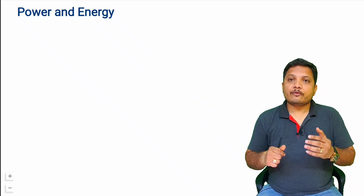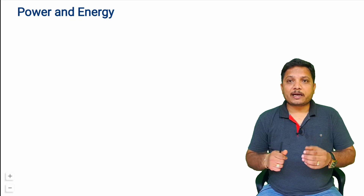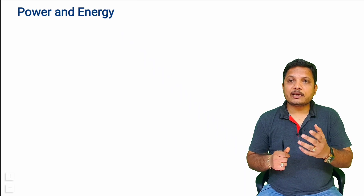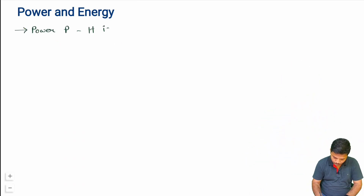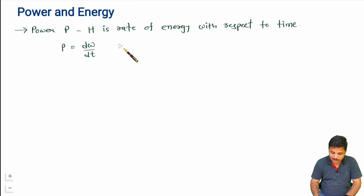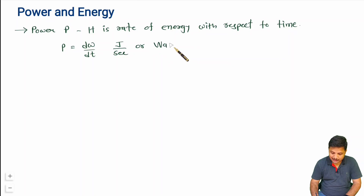Power is the rate of energy with respect to time. Using this basic definition, we can derive the basic formula of power. When you want to calculate power, that is dW/dt, where W is energy and T is time. The unit of energy is joule and time is in seconds, so joule per second is the unit of power — also called watt.